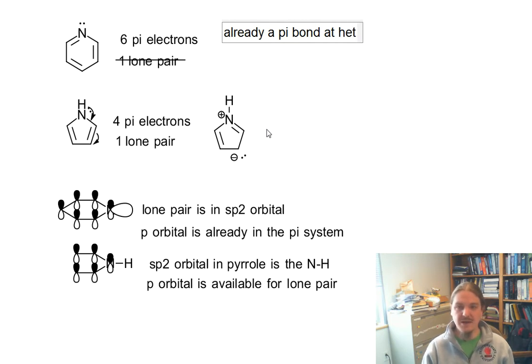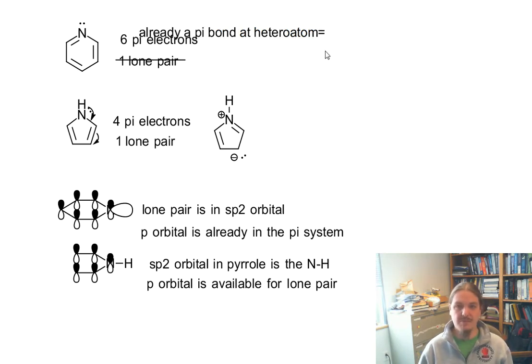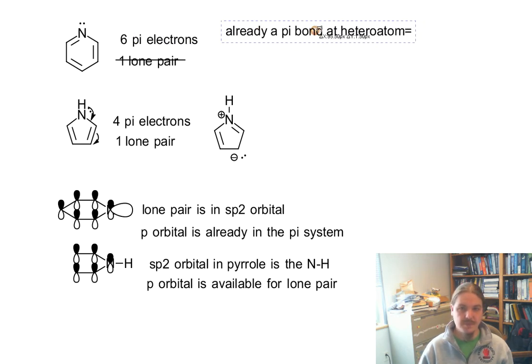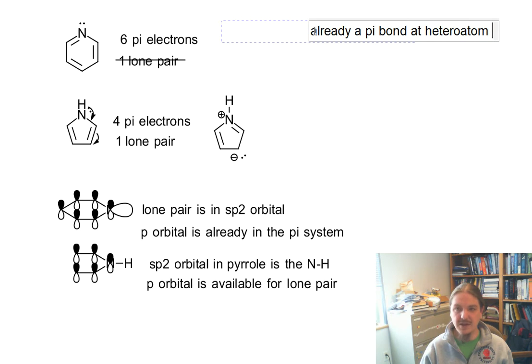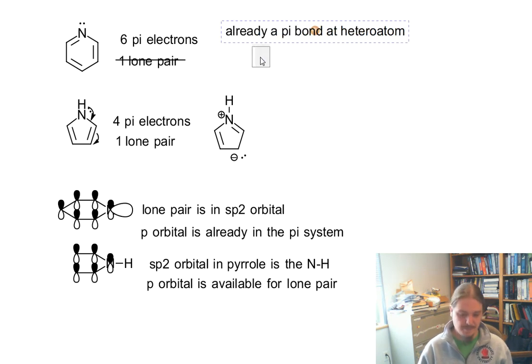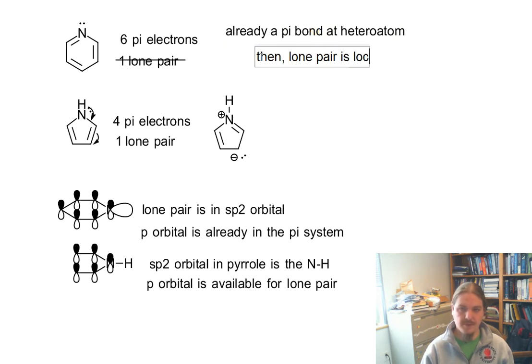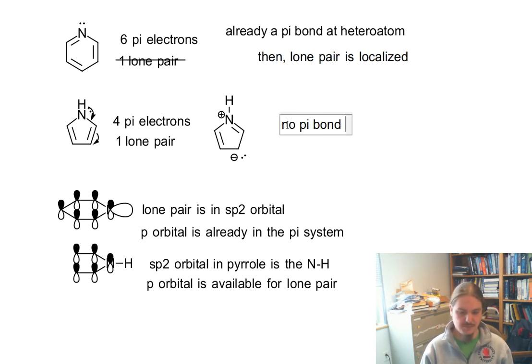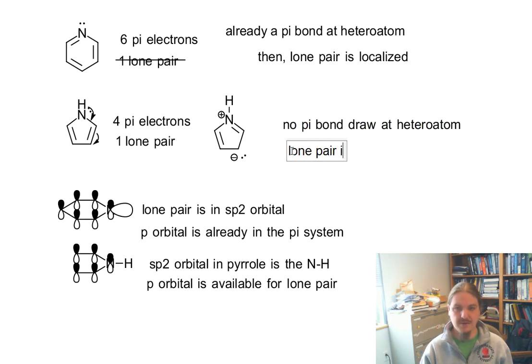If there is already a pi bond at the hetero atom, and this is usually a nitrogen issue. If there is already a pi bond at the hetero atom, then the lone pair is localized. If there is no pi bond drawn at hetero atom, then the lone pair is delocalized.